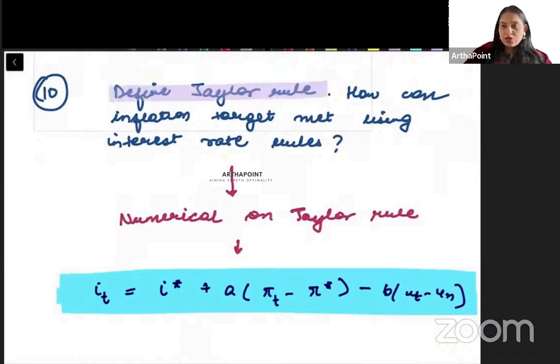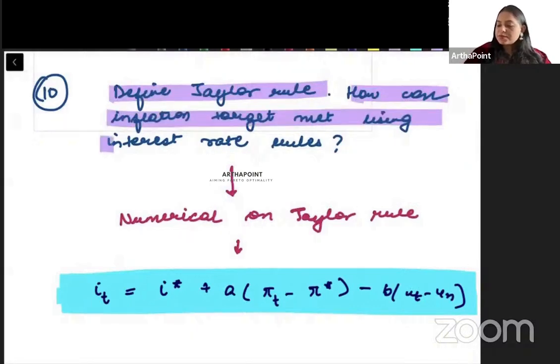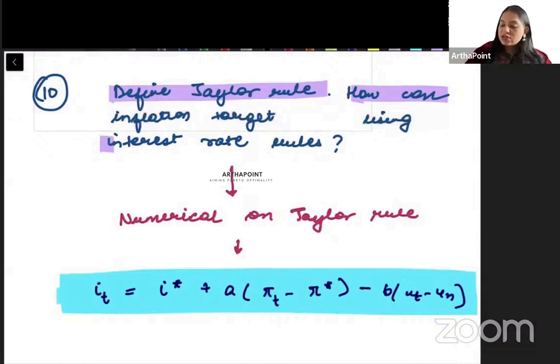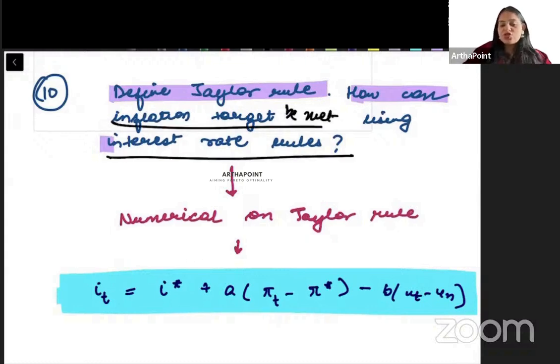Question number 10 meter last question for today. So define Taylor rule. How can inflation target be met using interest rate rules? Right. So this is the question that is going to be on one time. Interest rate rule ko achche se explain karne hai. Taylor rule ko achche se explain karne hai. And again